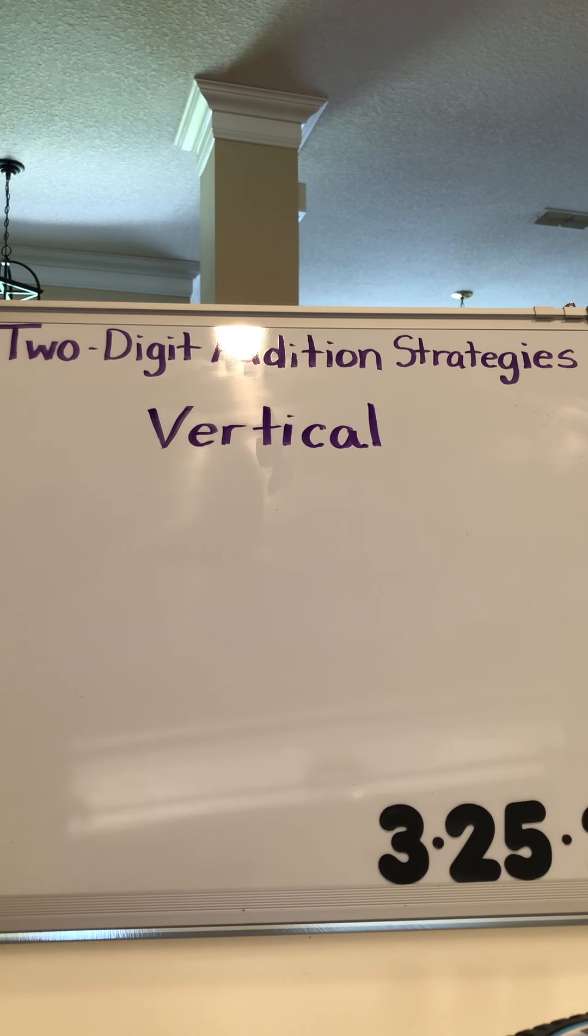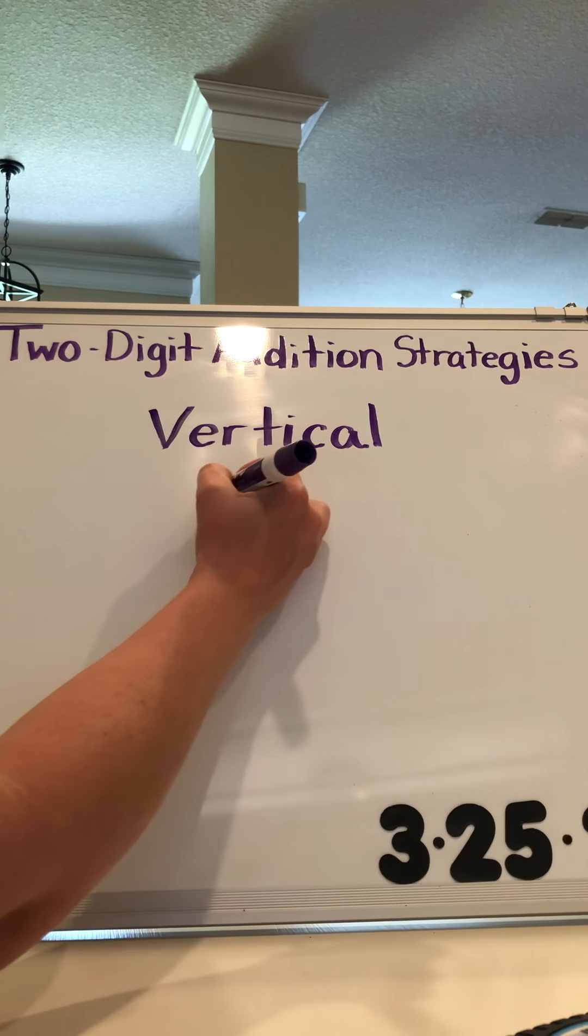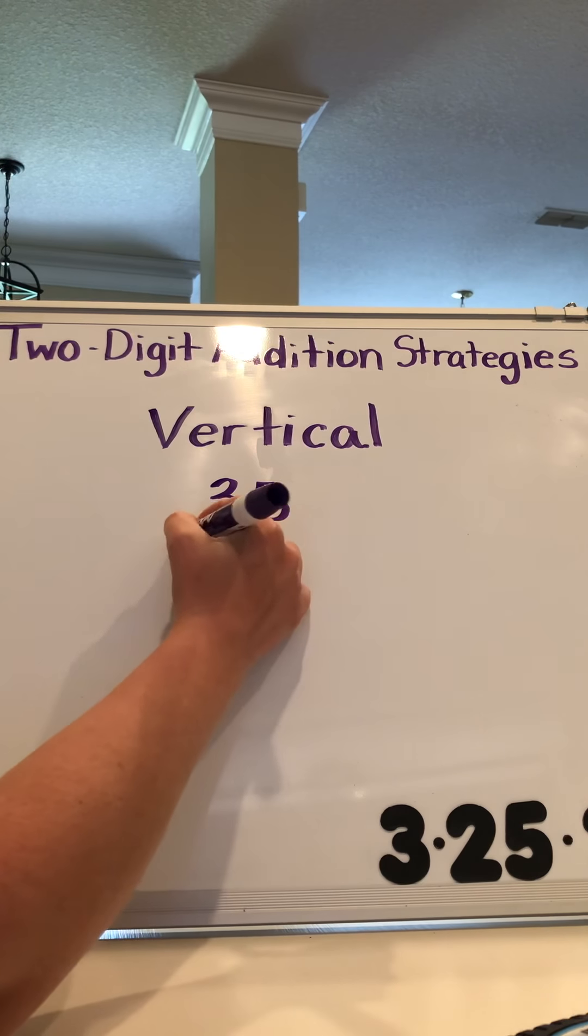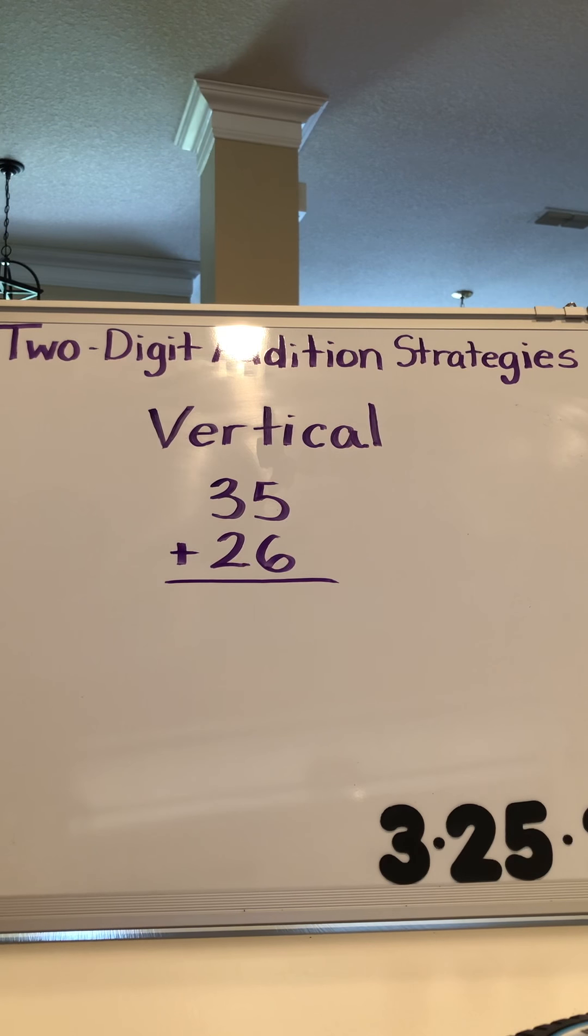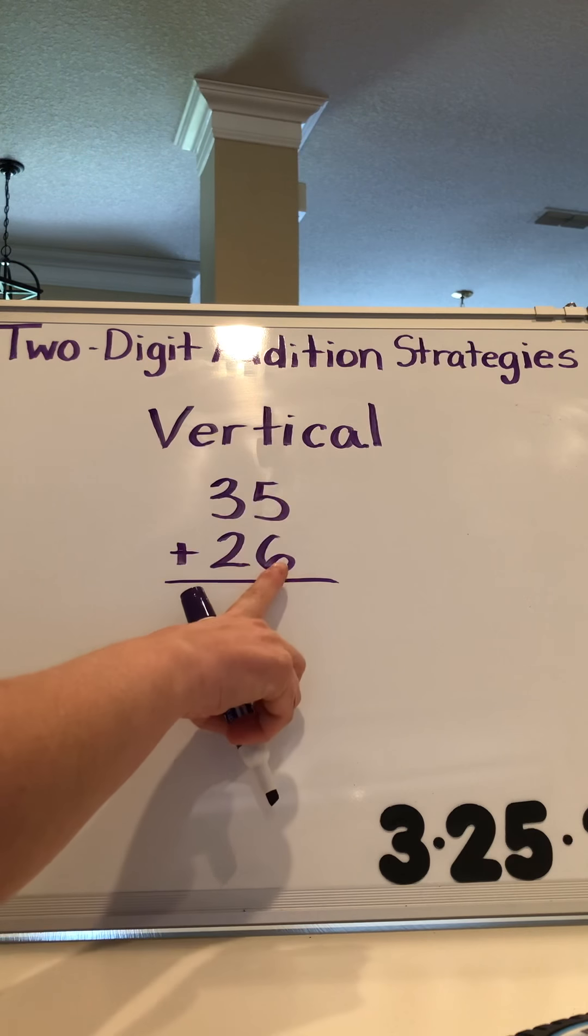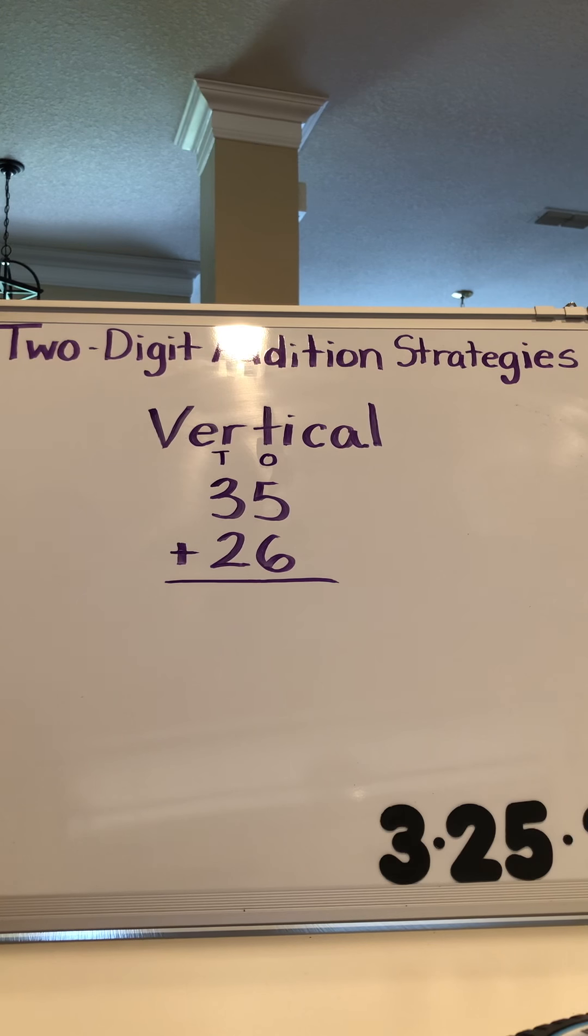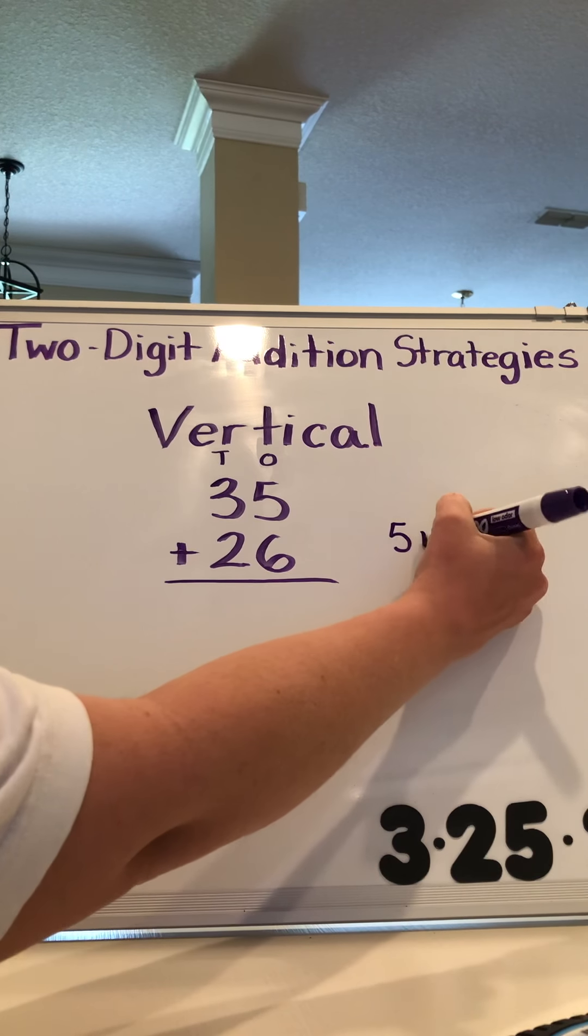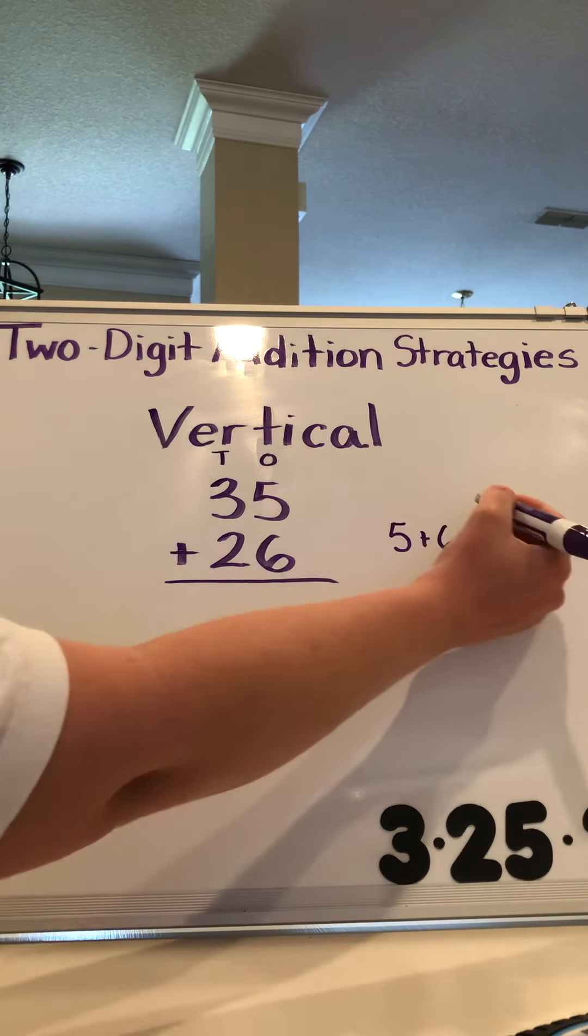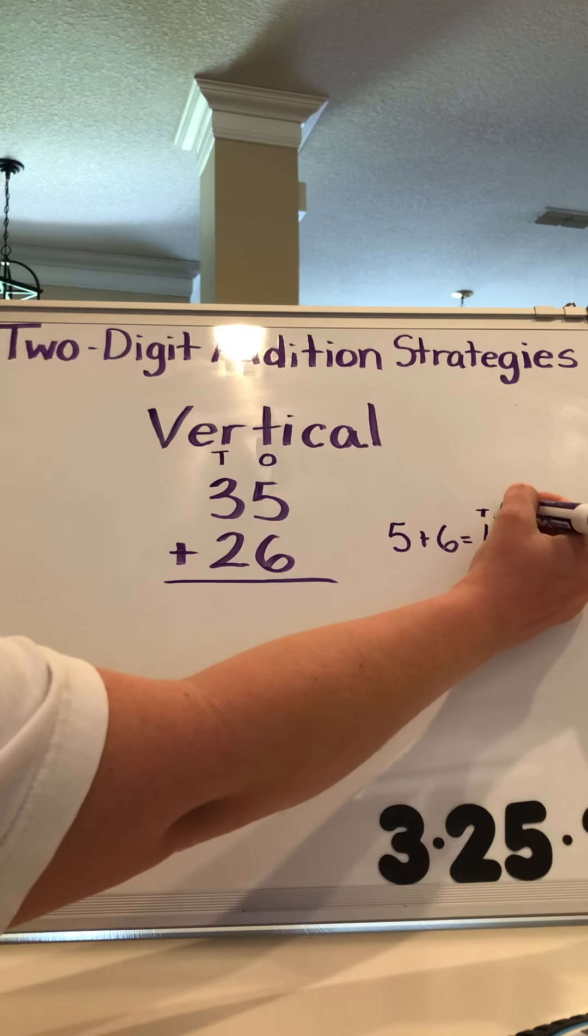This next strategy we call vertical math because we line the numbers up vertically. This is a strategy that a lot of students like because it's so quick for them to do, but I did explain to them that they have to be very careful and pay attention to their place value when they do vertical math. So when you do vertical math you line up your numbers and you have to make sure that your ones place lines up and your tens place lines up. So I have my tens here and my ones here. When we do vertical math we always start with the ones, not the tens. So I'm going to add 5 and 6. Now when I add 5 and 6, that number is greater than ten. I know that 5 plus 6 equals 11. Well 11 has a ten and a 1. If I look at my place value chart I cannot put tens and ones down here. This is the ones place.